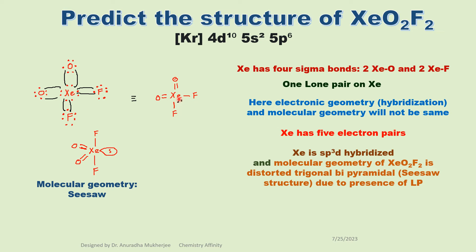But xenon O2F2 contains 1 lone pair, so molecular geometry will be distorted trigonal bipyramidal. Now this lone pair will occupy the equatorial position to reduce the bond pair-lone pair repulsion. So this double bond oxygen bond pair and this lone pair form an angle of 120 degrees.